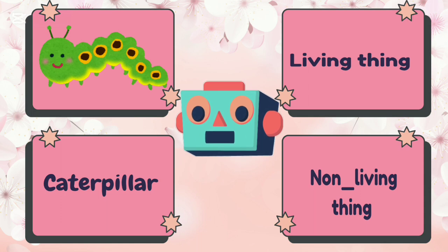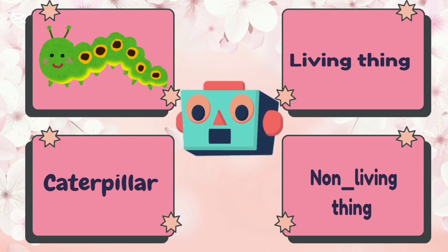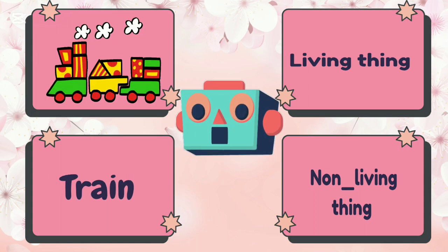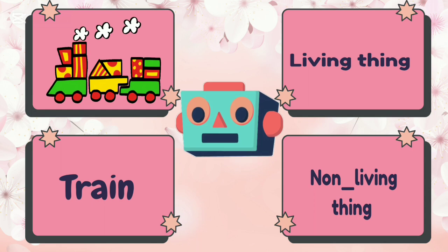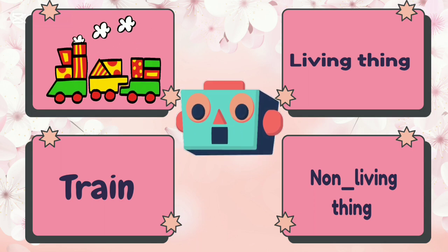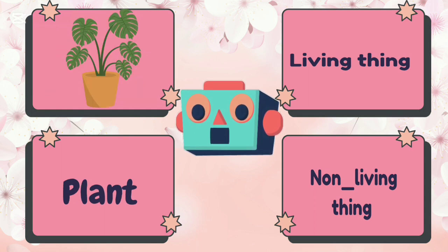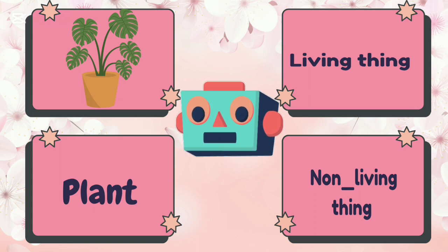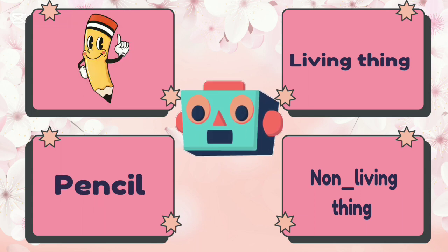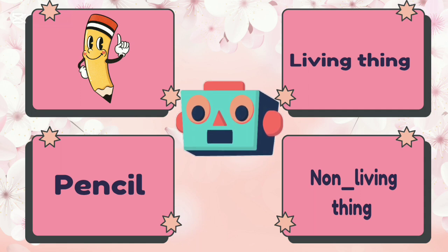Caterpillar is living thing or non-living thing? Caterpillar is living thing. Train is living thing or non-living thing? Train is non-living thing. Plant is living thing or non-living thing? Plant is living thing. Pencil is living thing or non-living thing? Pencil is non-living thing.